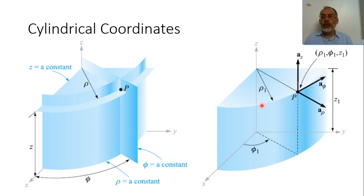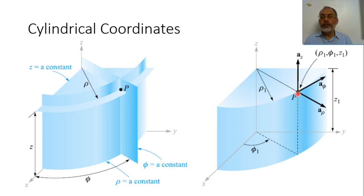Assuming this is the surface of a cylinder of radius rho1, the point B can be represented as the value rho1 — the radius of the cylinder surface — the angle phi1, which is the angle from the x-axis, and the value of z. So any point in cylindrical coordinates is represented in terms of rho, phi, and z.